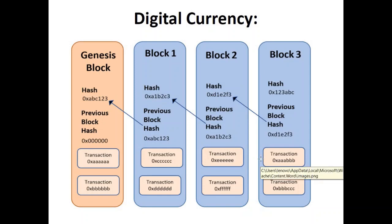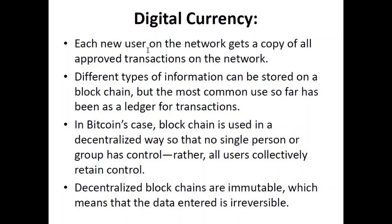Each new user on the network gets a copy of all approved transactions — effectively a copy of the whole blockchain. Different types of information can be stored on a blockchain, but so far the most common use has been as a ledger for financial transactions. In Bitcoin's case, the blockchain is used in a decentralized way so that no single person or group has control; all users collectively have control. This applies to every cryptocurrency — all are decentralized. Decentralized blockchains are immutable, meaning transactions recorded on them are irreversible and cannot be altered.